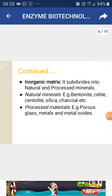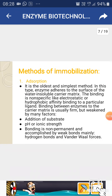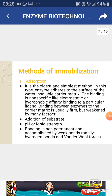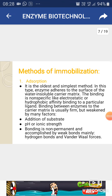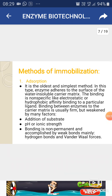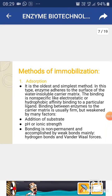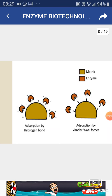There are five different methods of immobilization. The first is adsorption — the oldest and simplest method. In this method, the enzyme adheres to the surface of a water-insoluble carrier matrix. The binding is non-specific, like electrostatic or hydrophobic affinity binding. Binding between enzyme and carrier matrix is usually firm but weakened by factors like substrate addition, pH, or ionic strength. The bonding is non-permanent.